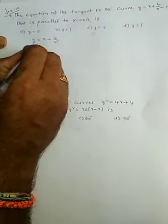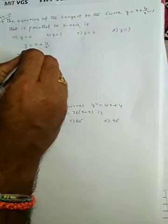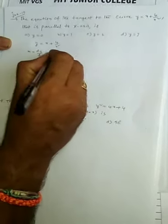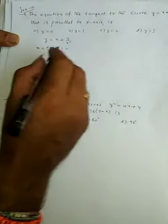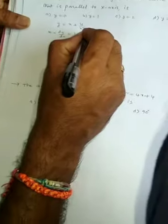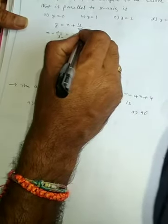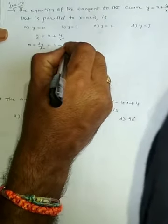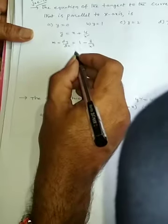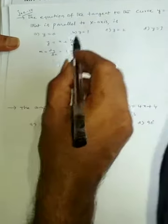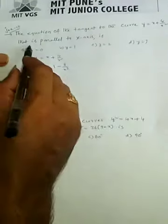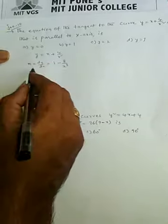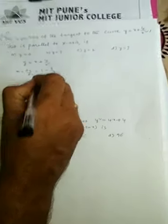So m = dy/dx. The derivative gives: 1 minus 8/x³. From the question, the tangent is parallel to the x-axis, which means slope m = 0.